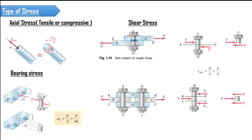When you consider a bolt, this is a single shear plane. However, in a different configuration you can have two shear planes — this is also a case of shear stress, but it is called double shear because it has two shear areas.